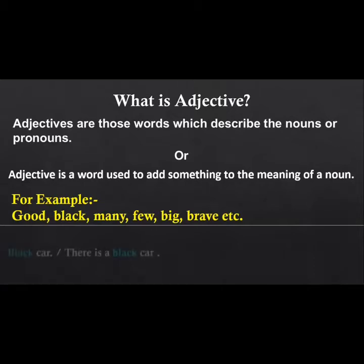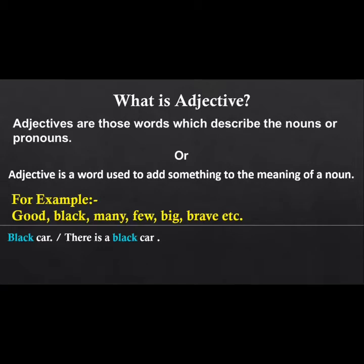Let us understand with an example. Suppose we take the noun 'car' and join the word 'black' with it. The word 'black' tells us the color of the car. So black is an adjective — 'There is a black car.' Similarly, 'good' is an adjective — 'He is a good boy.'